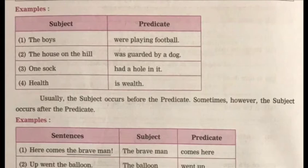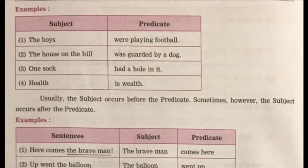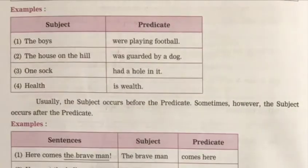'Health is wealth.' Who is wealth? Health. Now whenever you want to find the predicate, you will ask 'what'. 'The boys were playing football' — the boys were doing what? 'Were playing football.' So 'were playing football' is your predicate. 'One sock had a hole in it' — what did the sock have? A hole in it. So 'had a hole in it' is your predicate.